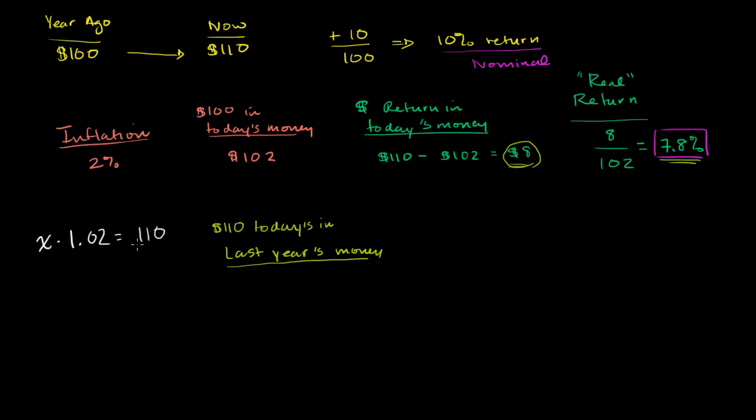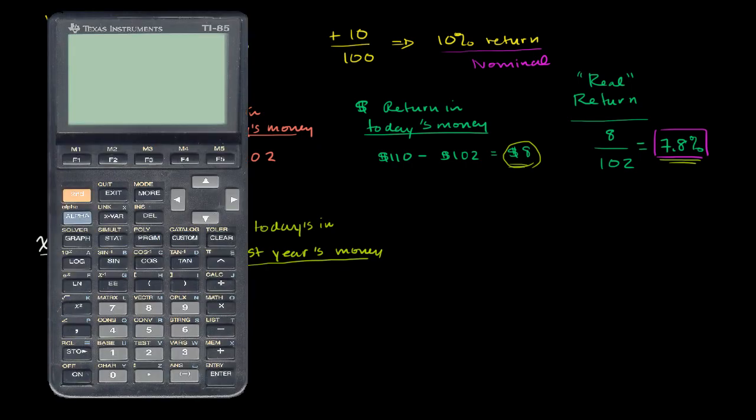that's going to be worth $110 today. Or, to just solve for x, you divide both sides by 1.02, and we get the amount of money that if you grow it by inflation, or that had the same amount of purchasing power as $110 today, would be $110 divided by 1.02